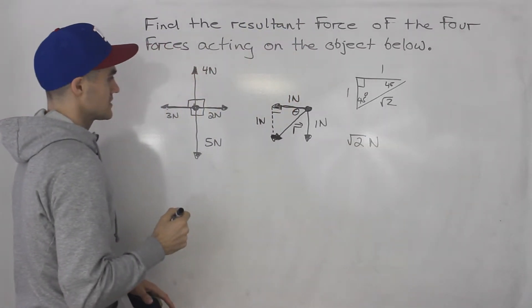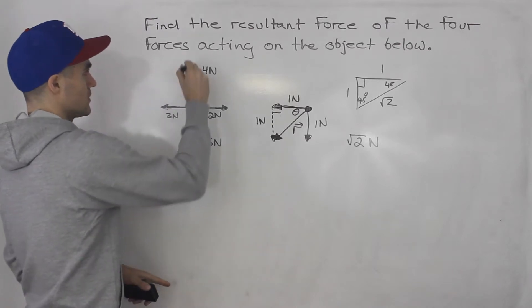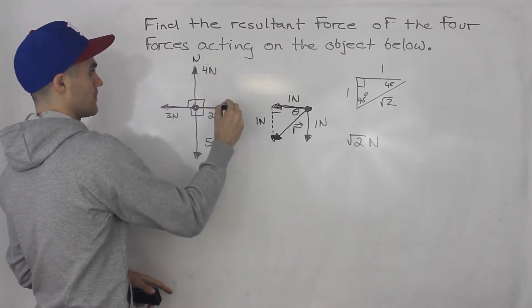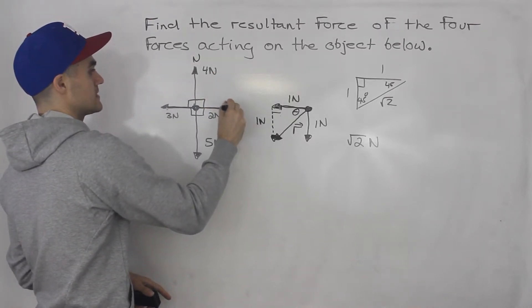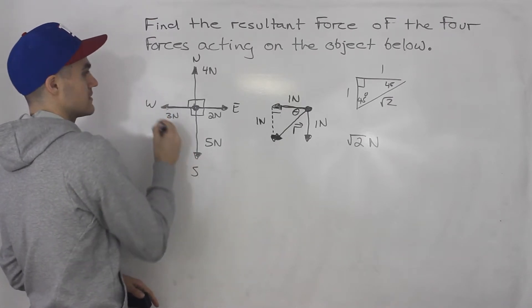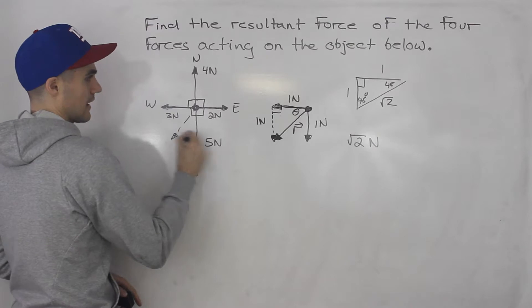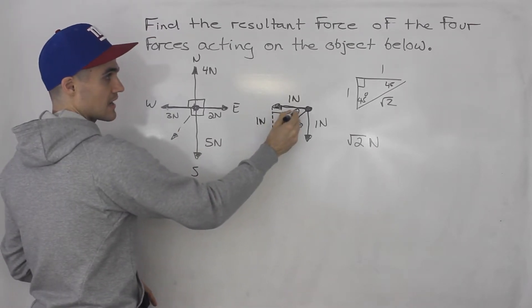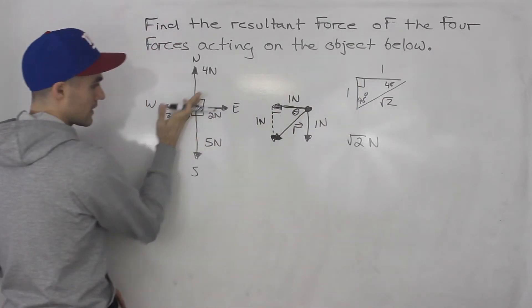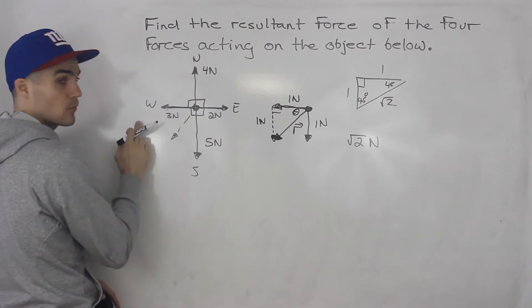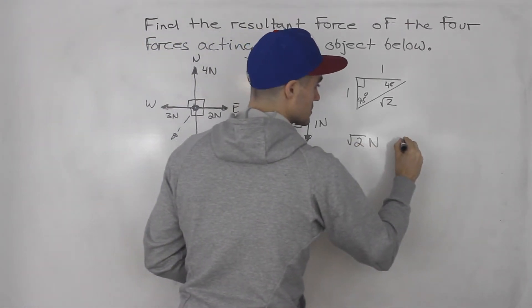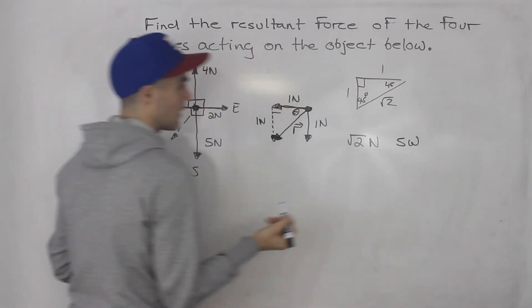And now the direction gets a little bit tricky. So if we assume that this is north, east, south, west, well, the resultant is going this way. And it's 45 degrees, this theta is 45 degrees. So it's like right in the middle. So it's actually going southwest. So we could say root two newtons, southwest.